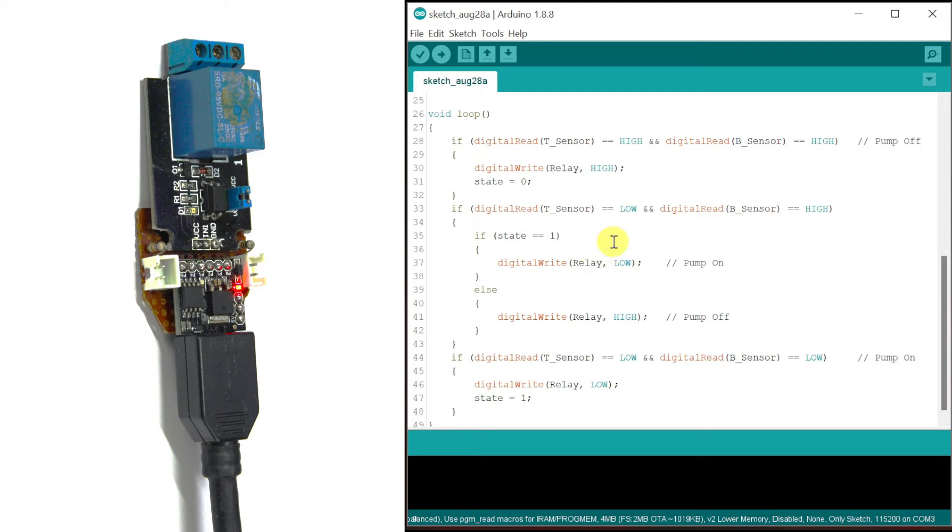The real magic happens here as it checks not only the state of the two float sensors, but also the state of the relay previously stored in the state variable.